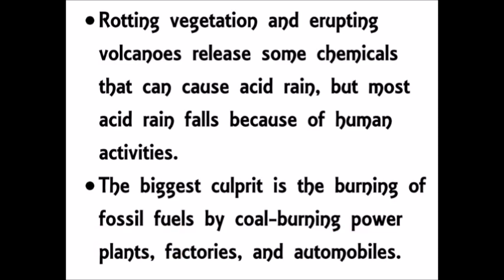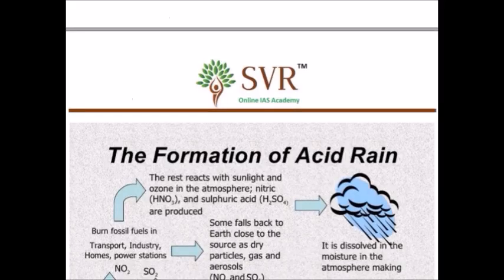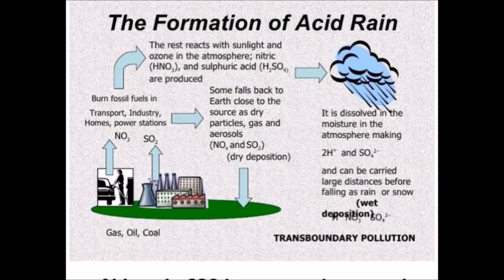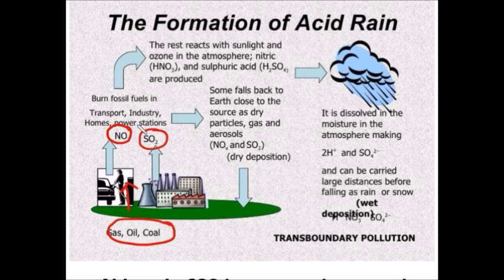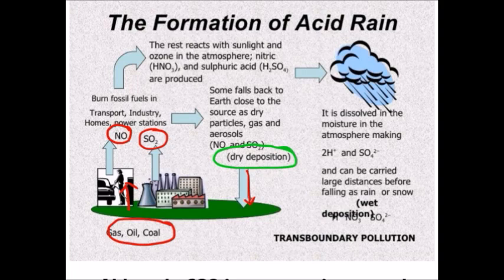In this image you can understand much better. Here you can see the gas, oil, and coal-based power plants which burn fossil fuels and release nitrogen dioxide and sulfur dioxide. Some of them fall back to earth close to the source as dry particles and aerosols — these are called dry deposition. The dry-deposited material, when it combines with water, forms nitric acid and sulfuric acid on the earth's surface.